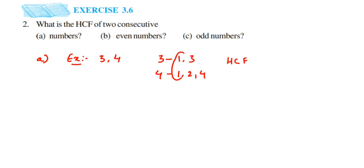HCF is the Highest Common Factor, and 1 is present in both. So the highest common factor is 1. This is not only for 3 and 4 — if you take any two consecutive numbers, the highest common factor is always 1. So the answer for the first question is 1.